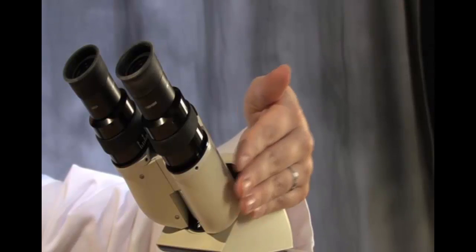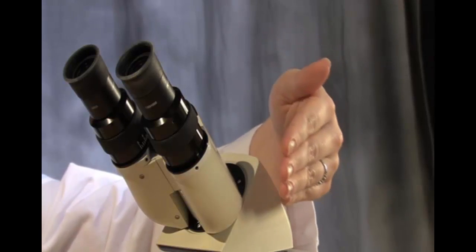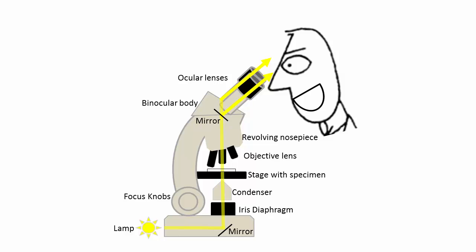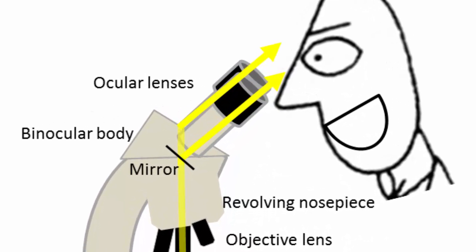As you work your way down the scope, we have the binocular body. The binocular body contains mirrors which will take a single image and split it to both eyes simultaneously.